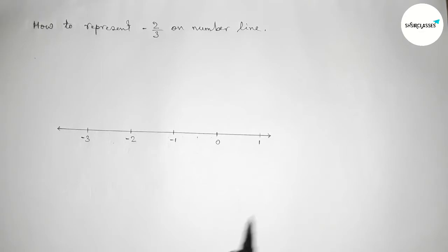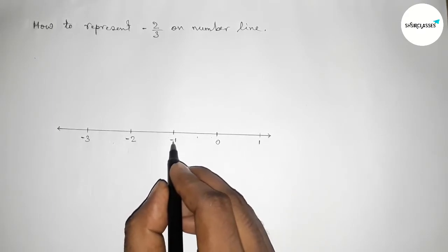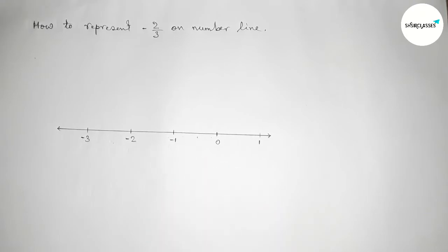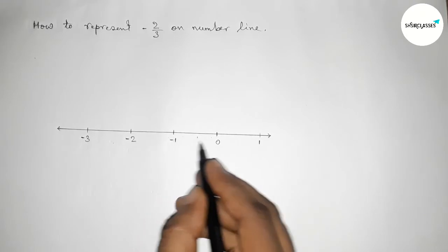So now I am going to divide the length between 0 to minus 1 into 3 equal parts approximately by using scale.